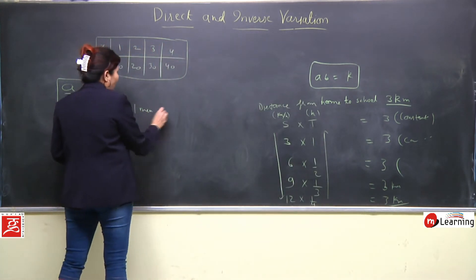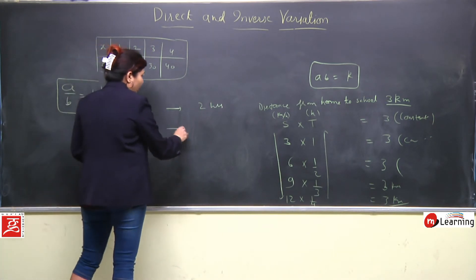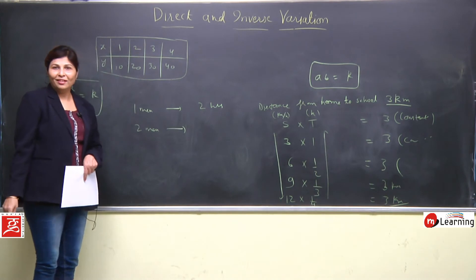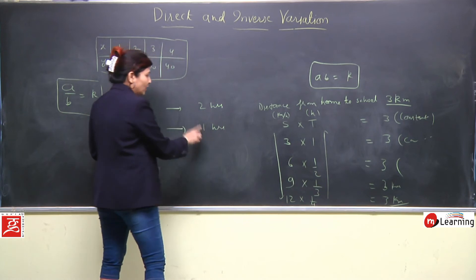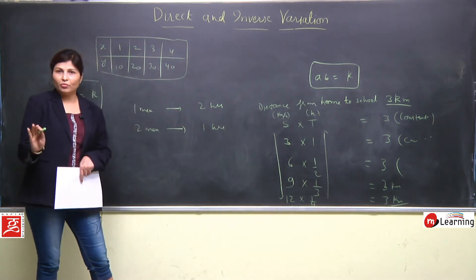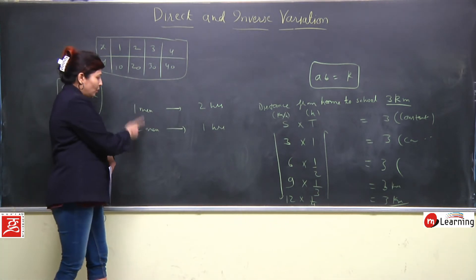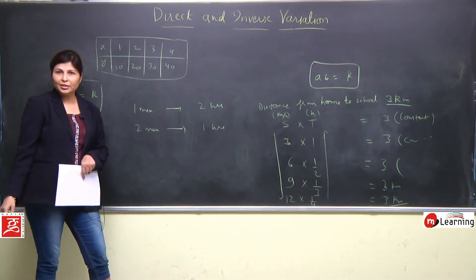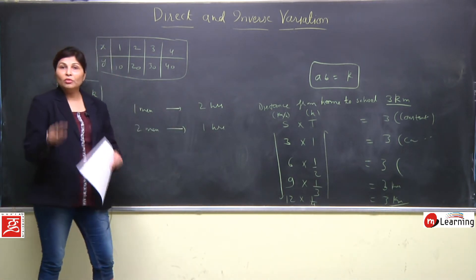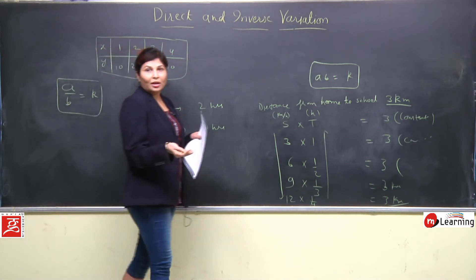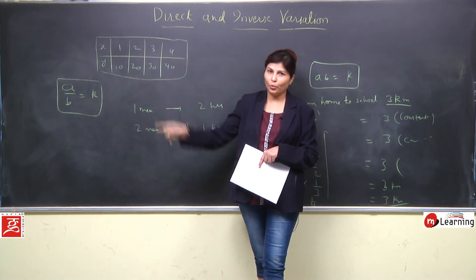Ek simple sa example: ek man ek kaam ko karne ke liye two hours le raha hai. Toh two men lenge toh kya hoga? Time kam ho jayega. Ye average le raha hai, exact nahi — but agar log badhaye, labour increase ki, toh time kam lagega. Toh reverse ho raha hai — aur jo opposite/ulta hota hai, that is called inverse variation.